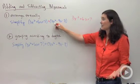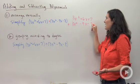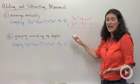And then to that I'm going to add 3x squared, take away 9x, take away 8. Now I'm just going to add vertically.